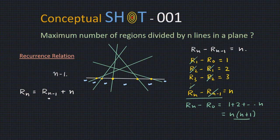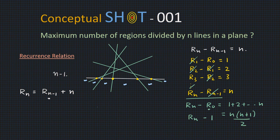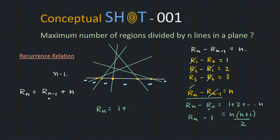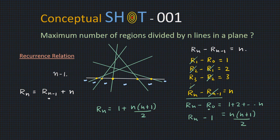Now, what is r₀? r₀ is the number of regions created by 0 lines — and if we don't draw even one line, how many regions are created? Its value is 1. And from here you can see rₙ equals 1 plus n(n+1)/2. This is the formula we have derived through the recurrence relation. So we have seen two methods to arrive at this concept.